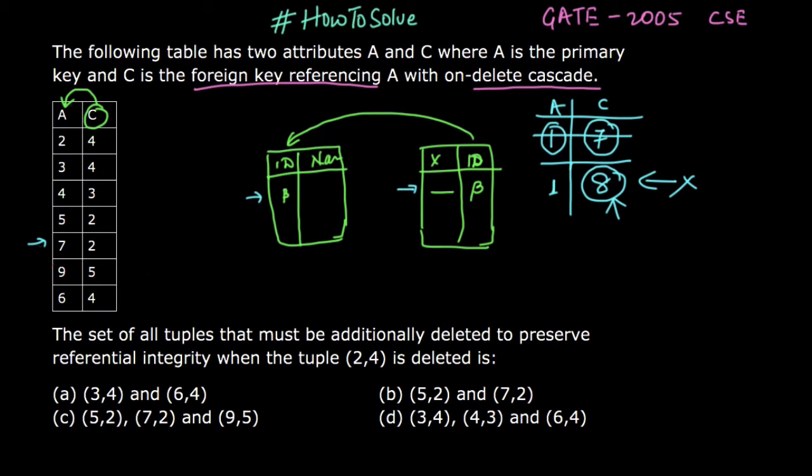Let's say I am deleting this 2 and 4. When I am deleting this (2, 4), I have to see what are the other tuples which have to be deleted because here when I am deleting (2, 4), the key attribute is 2. I have to take care that there should not be any tuple which has 2 as C value.